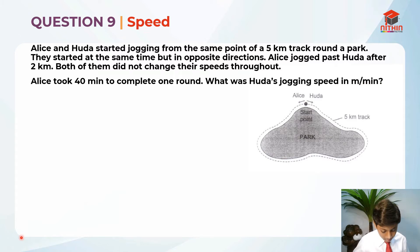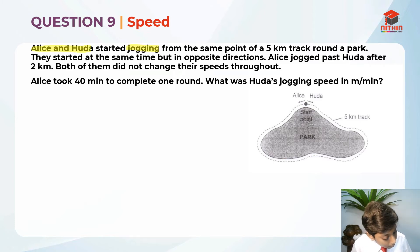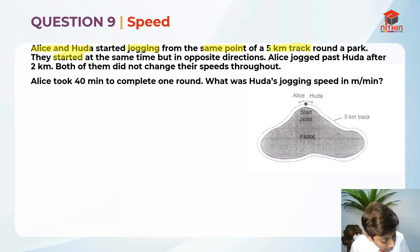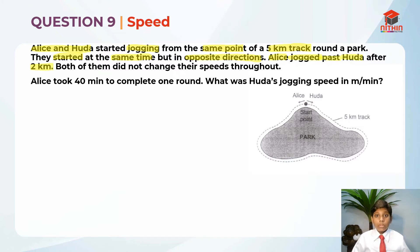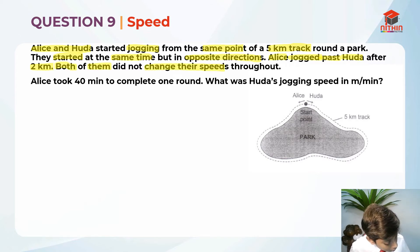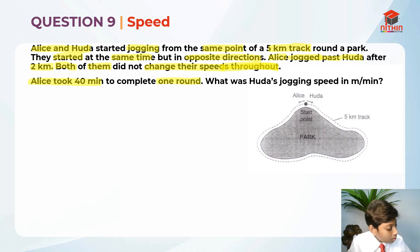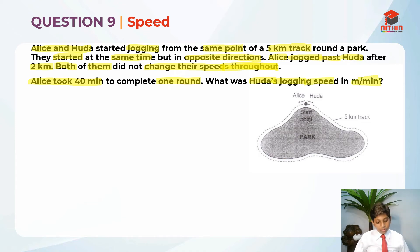Now that we have read the question, let's highlight the key information. Alice and Huda started jogging from the same point of a 5km track. They started at the same time but in opposite directions — so this is speed travelling in opposite directions. Alice jogged past Huda after 2km, which means Alice ran 2km and Huda ran 3km. Both did not change their speeds throughout. Alice took 40 minutes to complete one round.